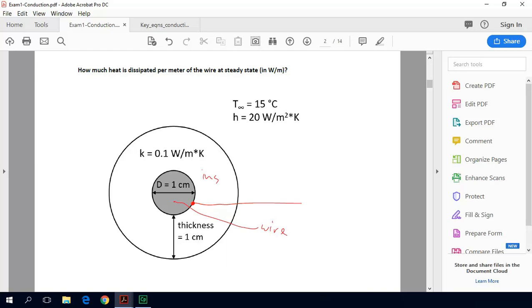So how does it get out? It first gets out by having to conduct through this insulation and then it has to convect from the insulation surface out into the ambient. So that means we're going to have a couple of different thermal resistances in series.